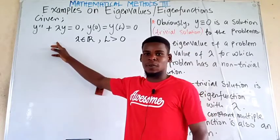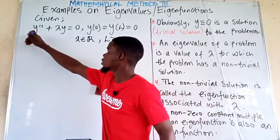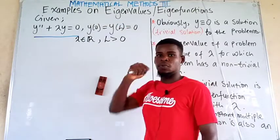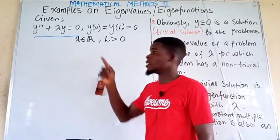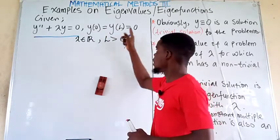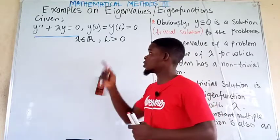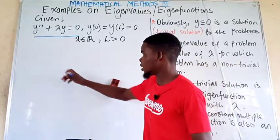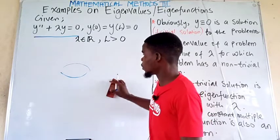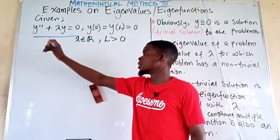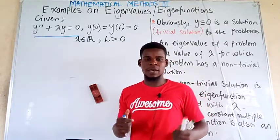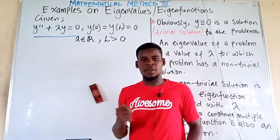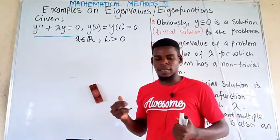This is a Sturm-Liouville form problem. We have boundary conditions: y evaluated at the endpoint zero equals zero, and y evaluated at the other end l, for any length l greater than zero, also equals zero. So the extreme ends are held at zero. The coefficient lambda here is a real number — it can be negative, zero, or positive — and it plays a very important role.